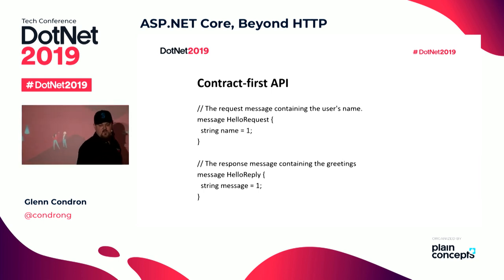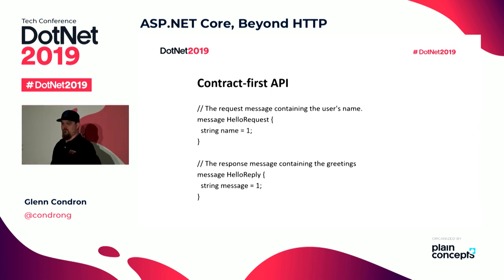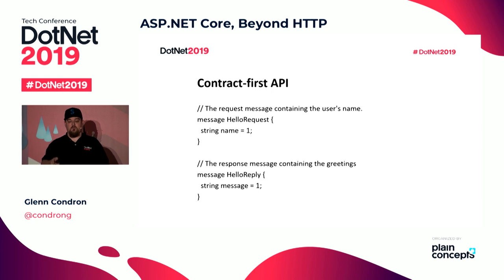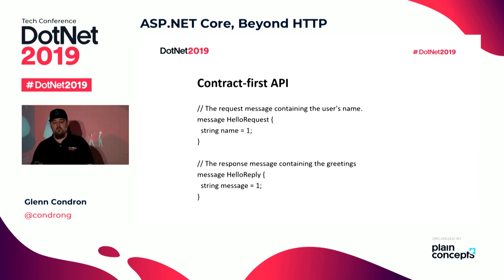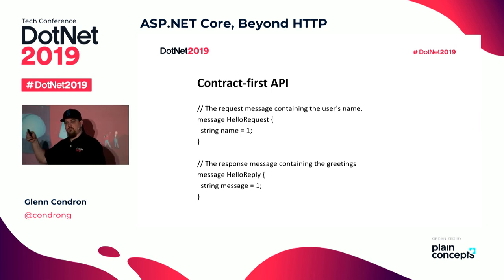Then you define the types — HelloRequest, which has a string called name, and HelloReply, which has a string message. You have to define the order in them for some reason that nobody has yet been able to explain to my satisfaction, but that's just the way it is. So you get one of these, or you craft one. Then you add NuGet packages to your server project that is going to run this — and one of those packages on build will generate a server for this service.